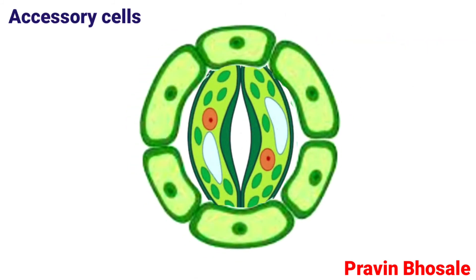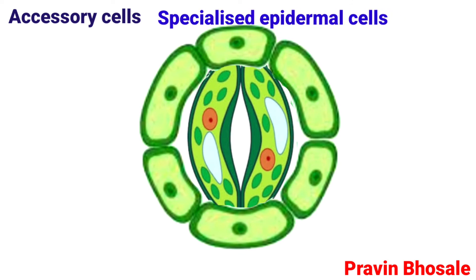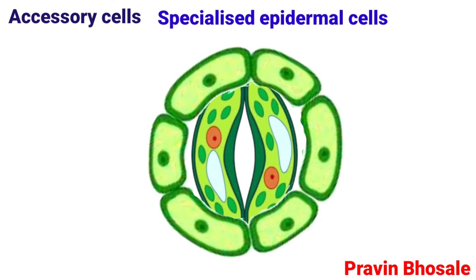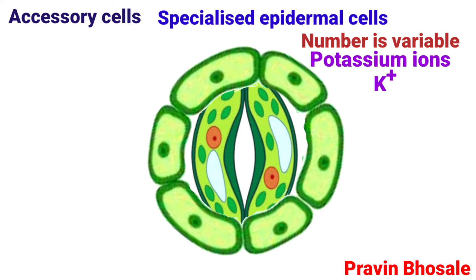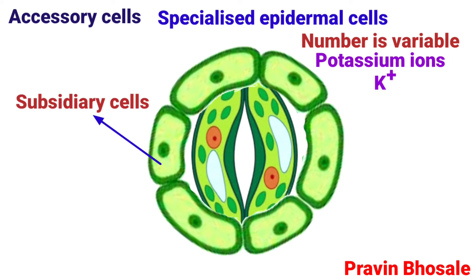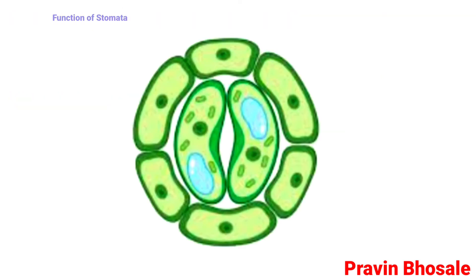Accessory cells are specialized epidermal cells surrounding the guard cells. Their number is variable and they serve as a reservoir of potassium ions. These are also called subsidiary cells.